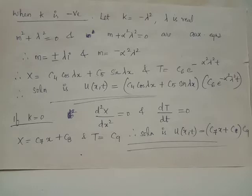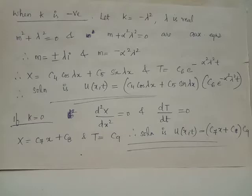X is expressed as a function of the independent variable x, and T is expressed as a function of the independent variable t. In this case, the solution is obtained as u(x, t) = X · T = (c4·cos(λx) + c5·sin(λx)) · c6·e^(−α²λ²t).